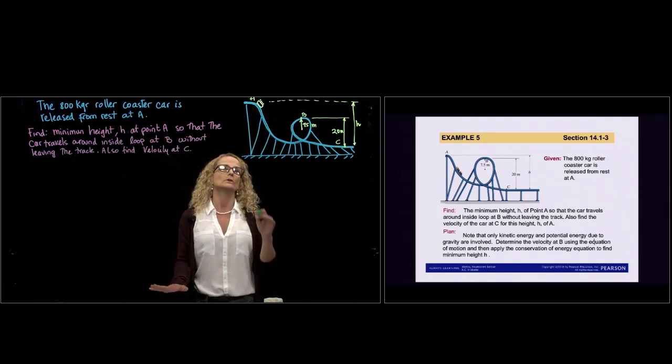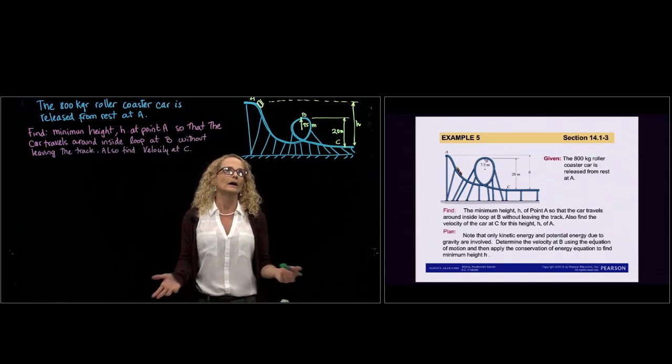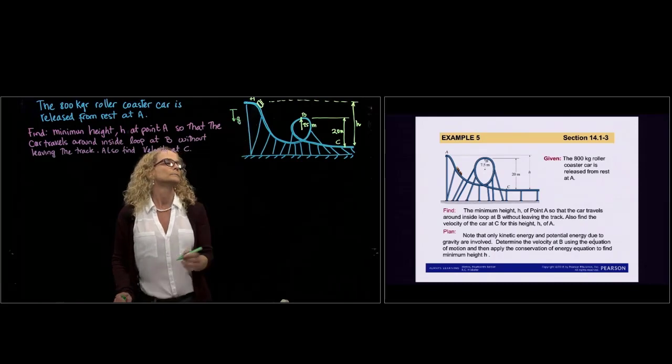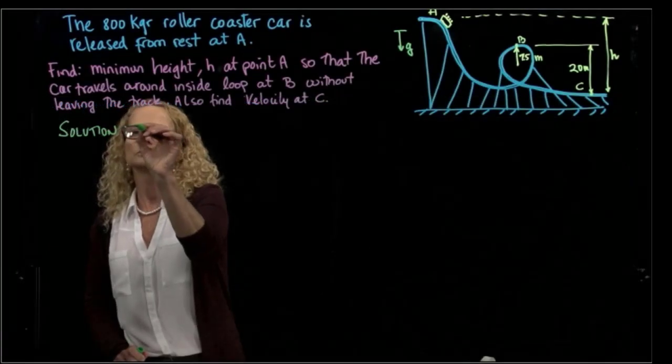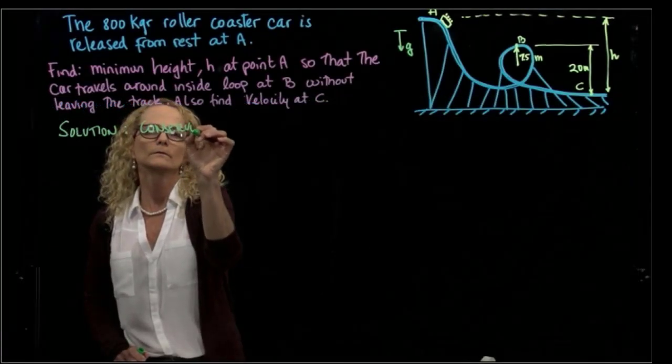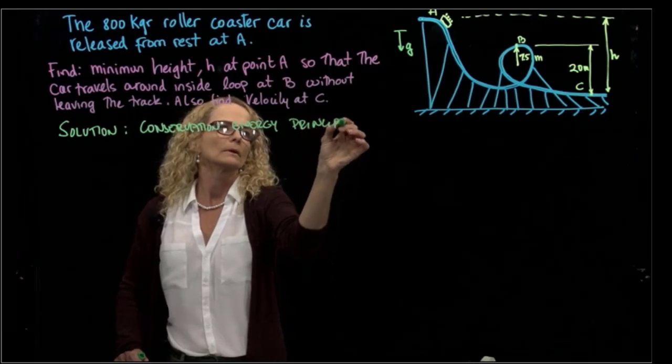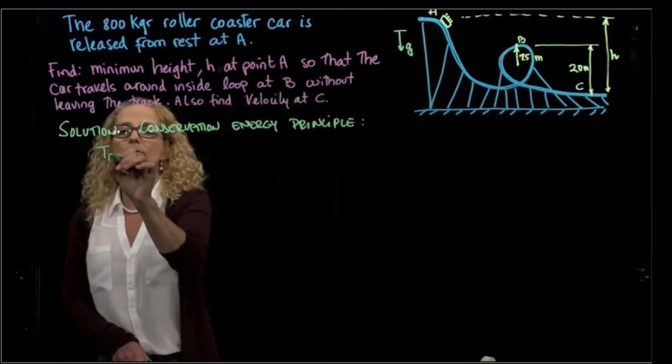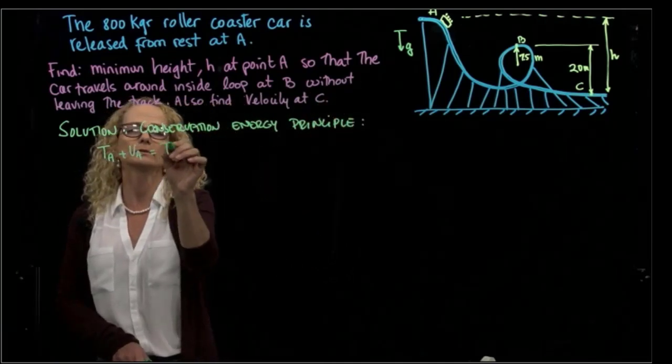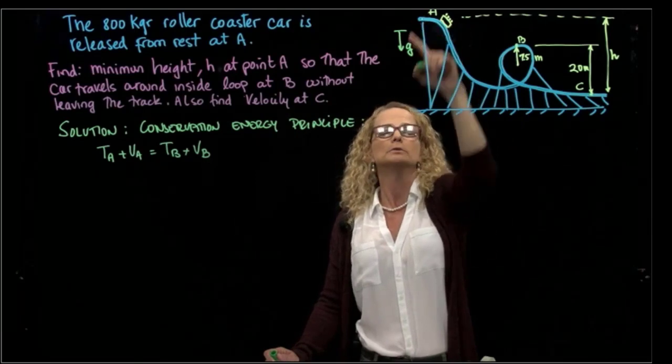We are considering no friction, so this is a problem of conservation of energy because we don't have any non-conservative forces that do produce work. So the only thing that we have is the gravity and velocity. So we will use the conservation of energy principle, which is that the total energy at initial position will be equal to total energy at final position. So our final position is this one here, and the initial position is here.